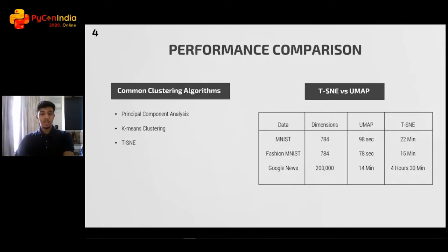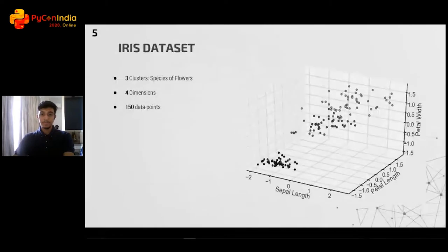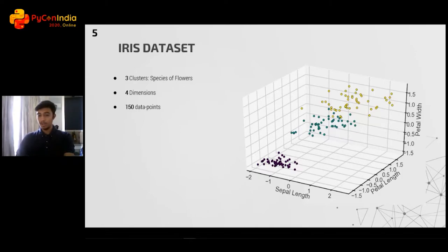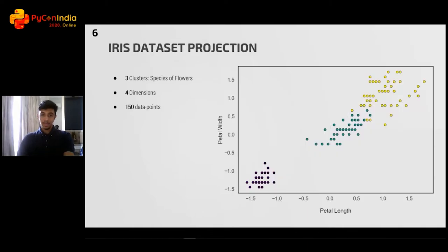Let's consider a dataset most of us know — the Iris dataset. The representation is generally how the algorithm sees it: just four dimensions and 150 data points. But we know that these data points belong to one of three clusters, color-coded according to the species of certain flowers. Let's adopt this color coding for the rest of the presentation. Since UMAP will be projecting into two dimensions, let us consider the 2D projection of our dataset, but remember that UMAP will be considering the full four-dimensional data. The 2D representation clearly shows all three groupings. Now let's see how UMAP works on it.